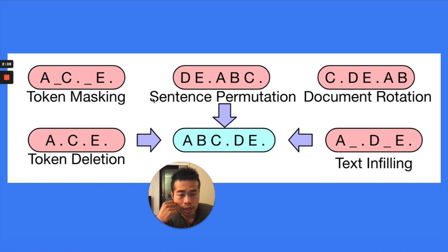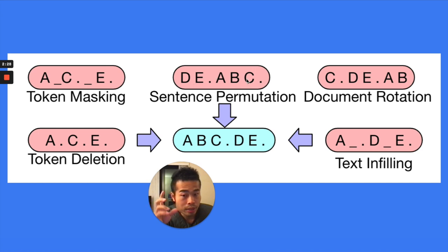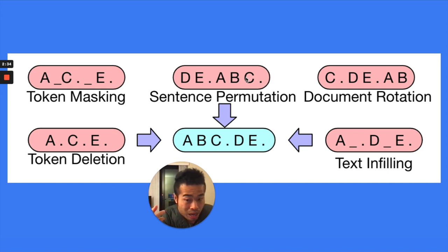There's also sentence permutation. Basically, A, B, C is one sentence and D, E is another sentence — you randomly permute these two sentences. The model needs to know that D, E is actually the second sentence, and A, B, C is actually the first sentence. You swap them and the model needs to learn that these two sentences were swapped, then predict the correct original order.